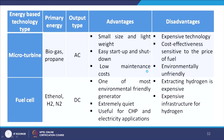Fuel cells use ethanol, H2, or N2 as input with a DC output. The major advantage is that it is one of the most environmentally friendly generators, extremely quiet with no noise, and useful for CHP and electricity applications. But the major disadvantage is that extracting hydrogen is quite expensive and an expensive hydrogen infrastructure is required.